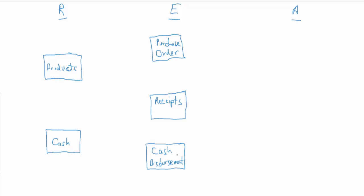Anytime that we're purchasing items, we've got a supplier or a vendor that we're dealing with. And generally, we'll have someone in or associated with the organization handling the transaction activities. In this case, the example has the business partner performing those activities, so we'll just say business partner.